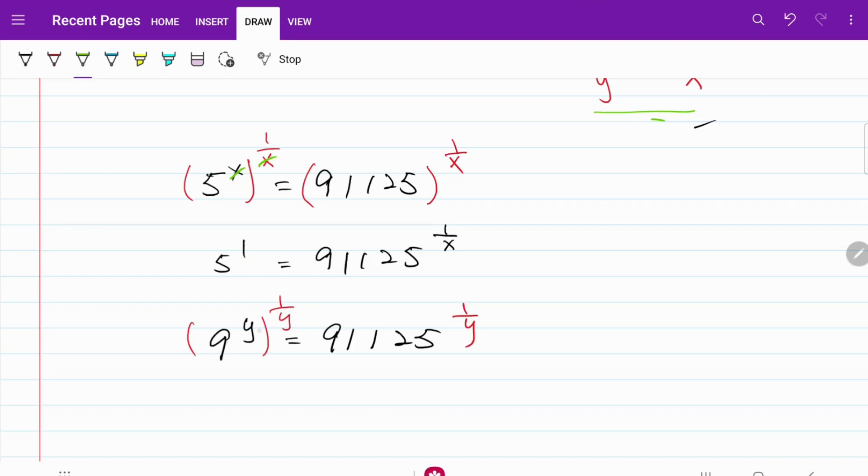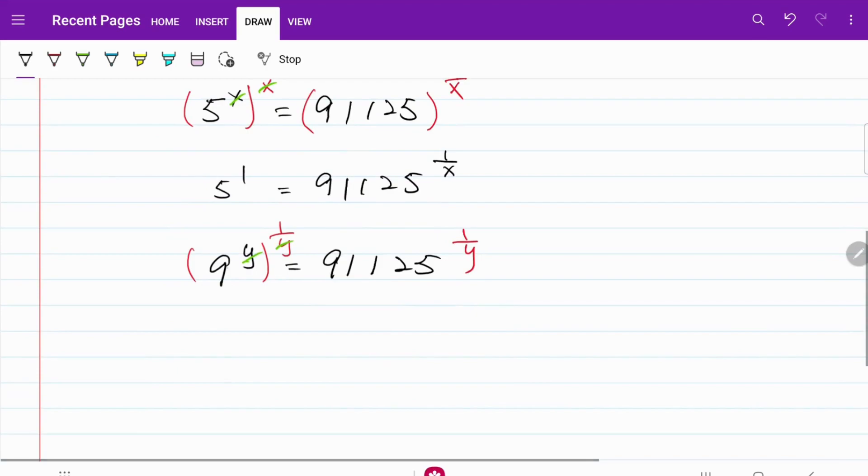And let the exponents cancel each other. What I now have is 9 to the power of 1 is equal to 91,125 to the power of 1 over y. I'm going to call this my equation 1. I'm going to call this my equation 2.